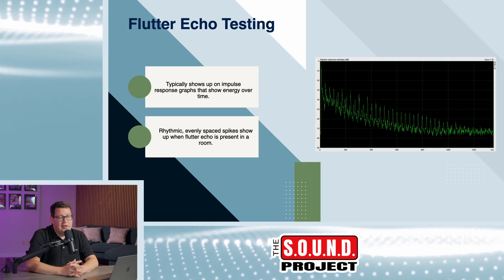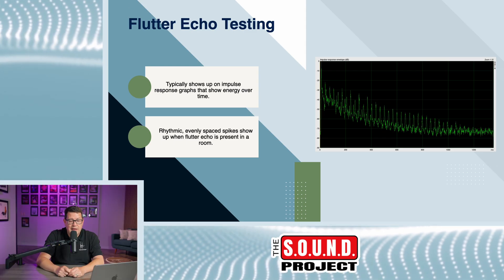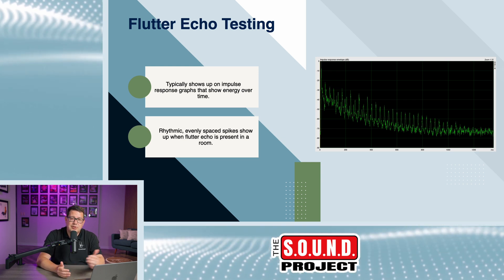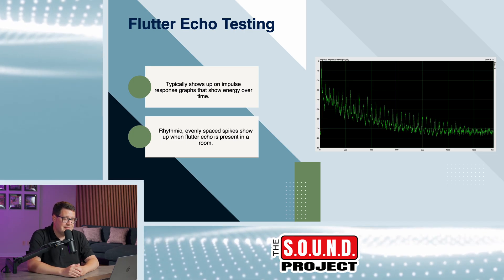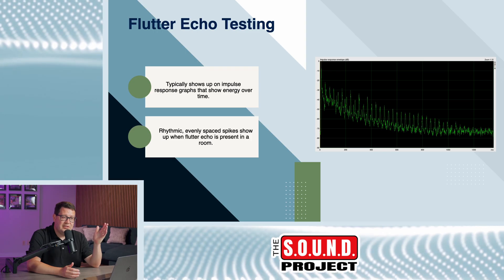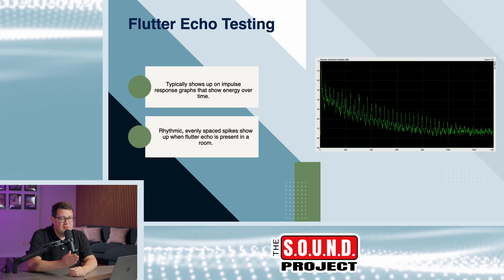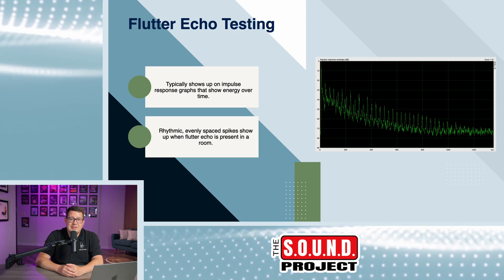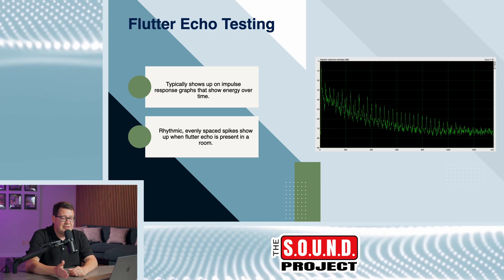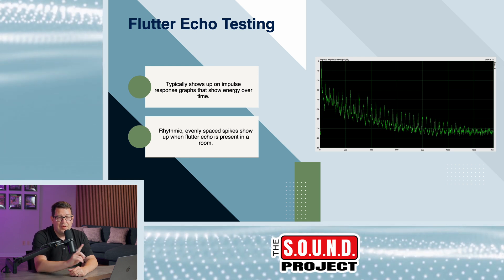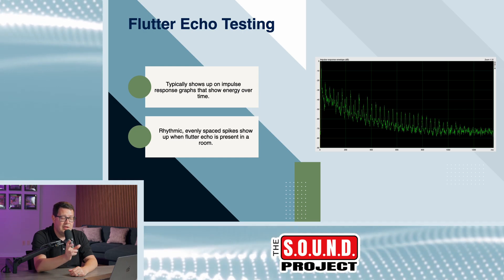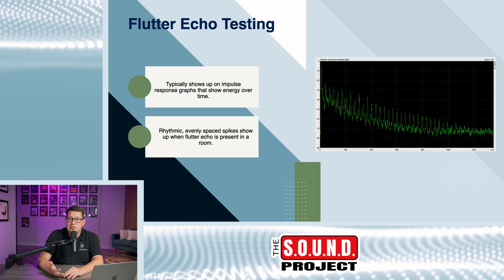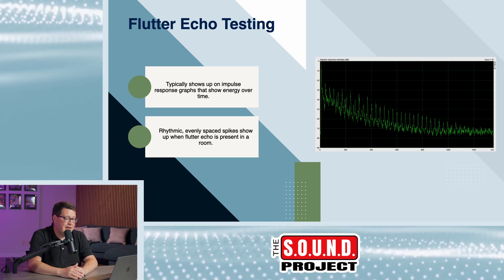When testing for flutter echo issues, you typically do an impulse response to show energy over time. On the graph shown, at time equals zero you see a large spike — amplitude is on the left axis and time is on the bottom axis. That large spike is the direct sound hitting the microphone from the test loudspeaker. All the subsequent spikes over time are delayed reflections coming from surfaces in the room. This impulse response shows flutter echo because those spikes are evenly spaced and rhythmic — the sound is taking the same path and distance every time, arriving back at the microphone in regular intervals.